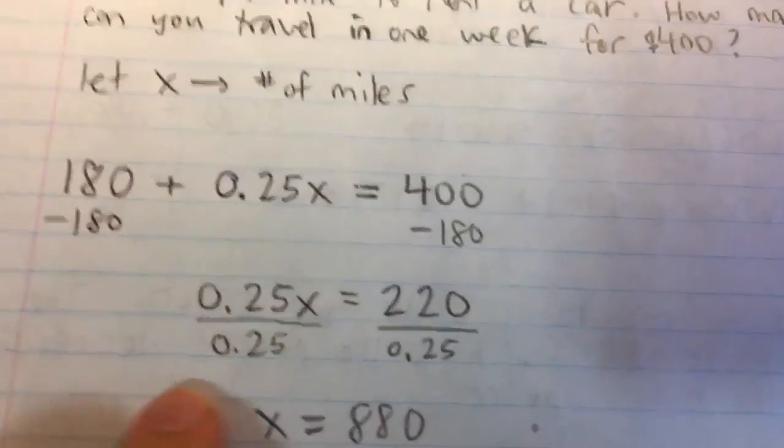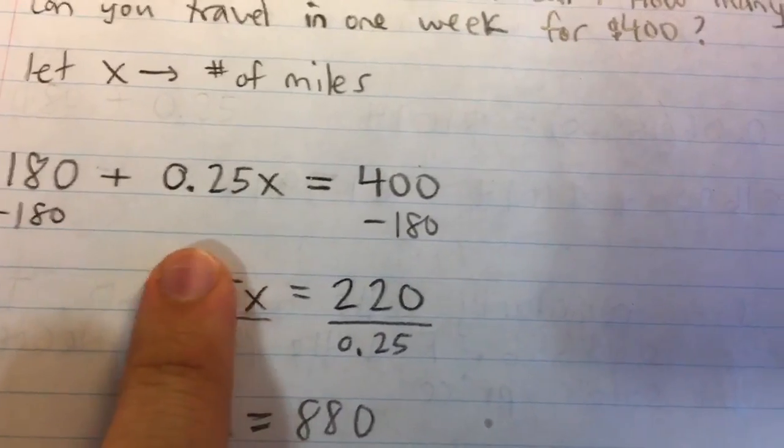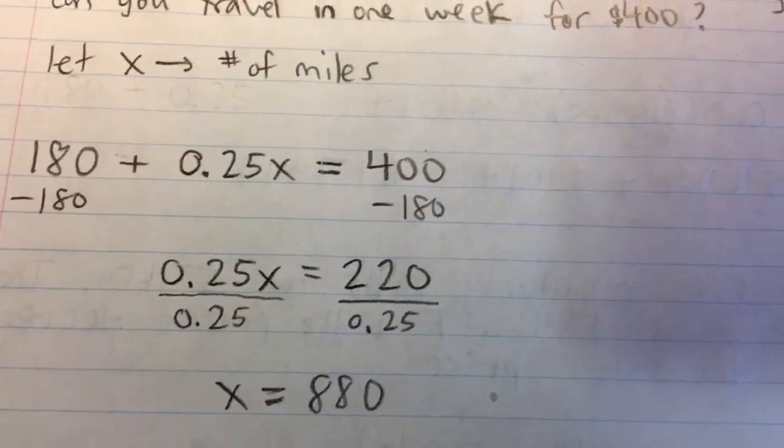Then I just divide both sides by 0.25, get rid of this coefficient on X, because I want to isolate it, and I'll get X is equal to 880.